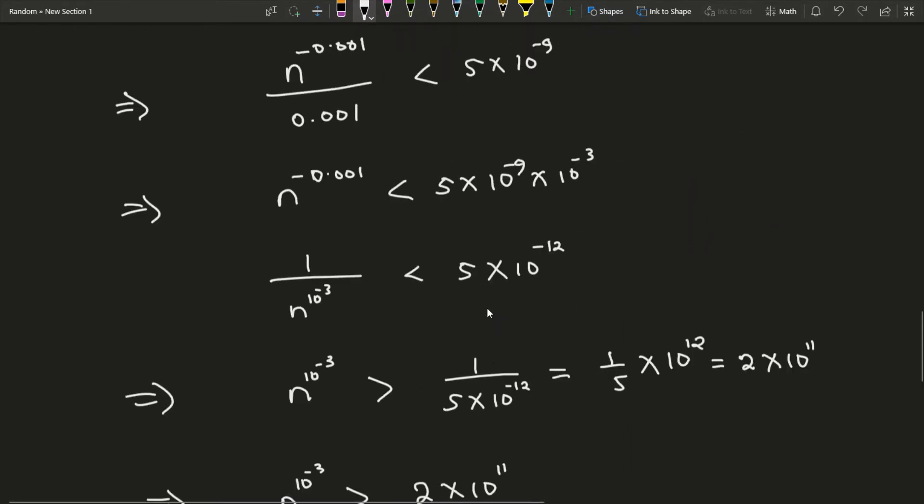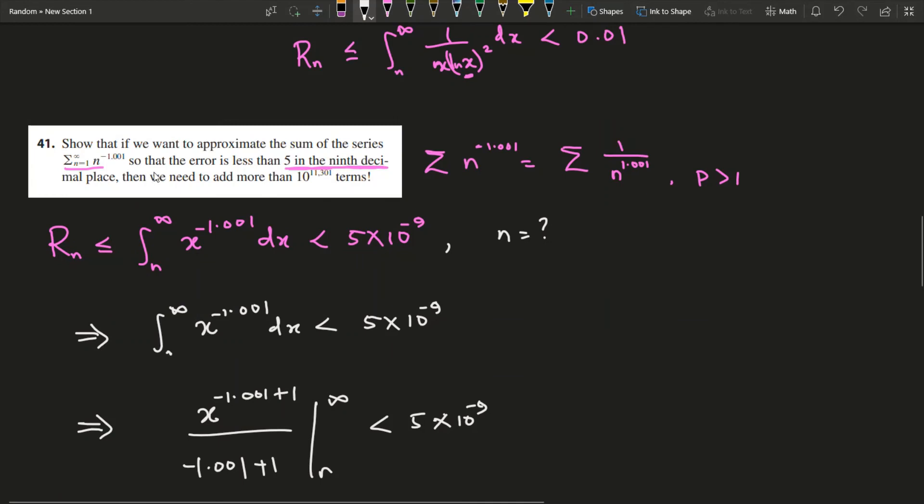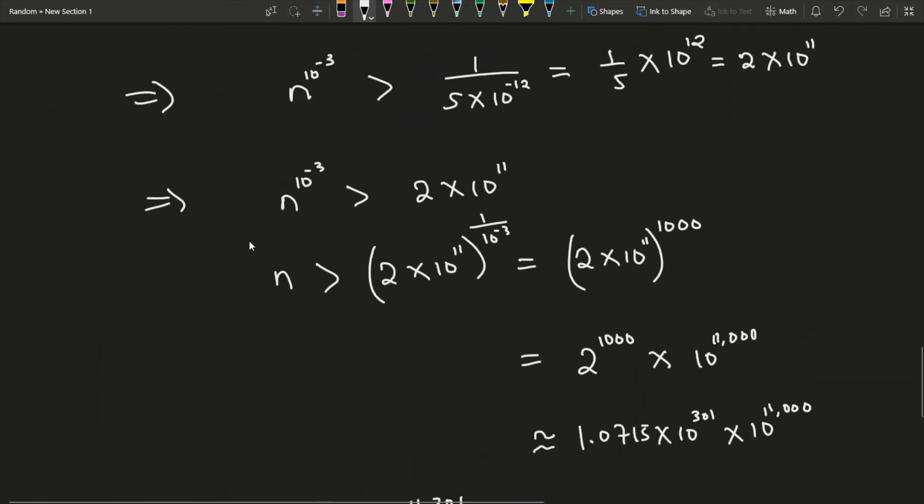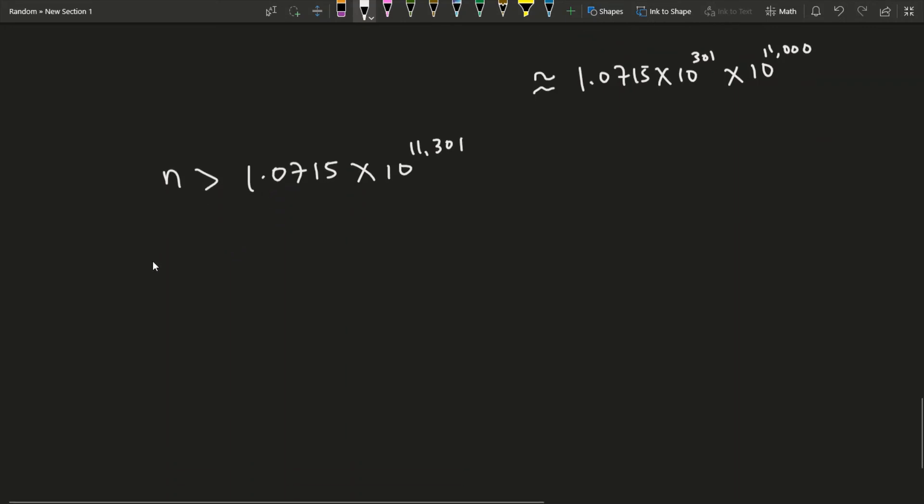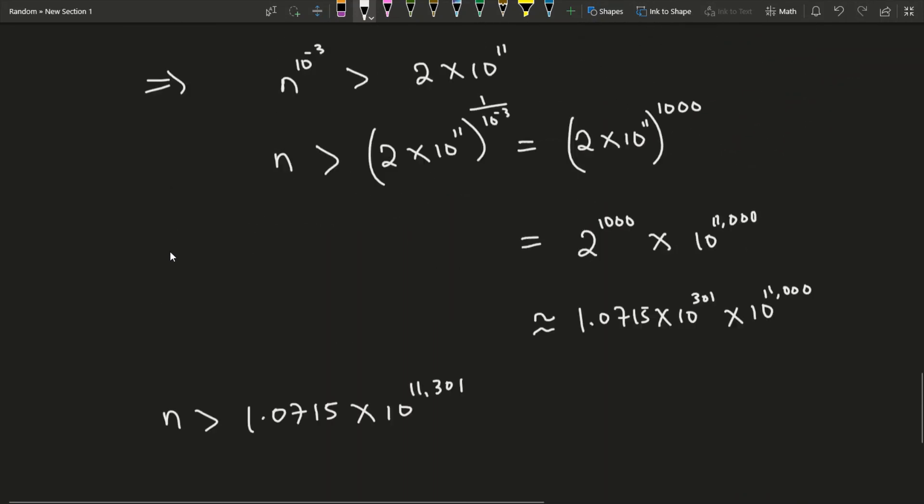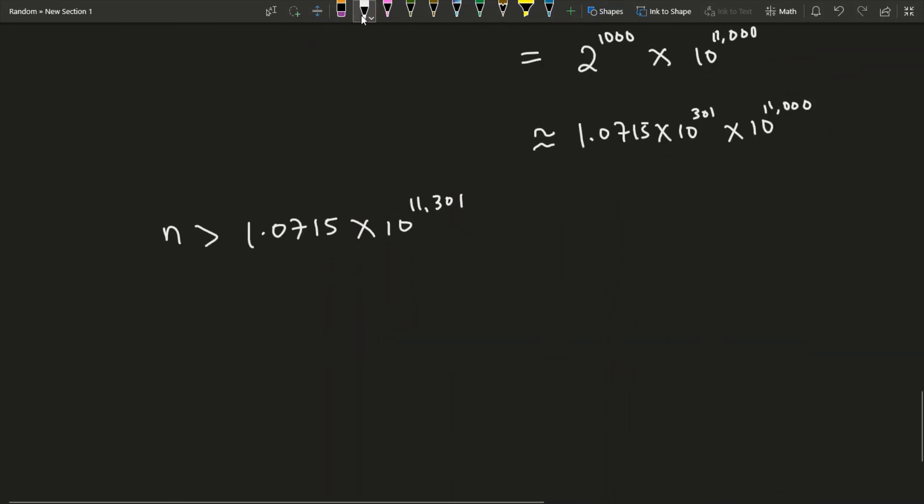The question says show that if we want to approximate the sum of the series so that the error is less than 5 in the ninth decimal place, then we need to add more than this many terms. Clearly you see we need to round this up, and since n must be integer, we get exactly what we are asked, that we must have this many terms involved.